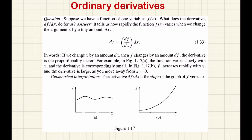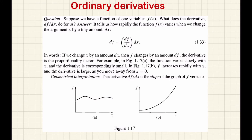Suppose you have two functions. One function varies slowly with respect to x — a very small variation. But in another case, the function varies very rapidly. This is the geometrical interpretation of the derivative: df by dx is the slope of the graph of f versus x. That is, the function versus x — you have a graph, and the slope equals the derivative of the function with respect to variable x.